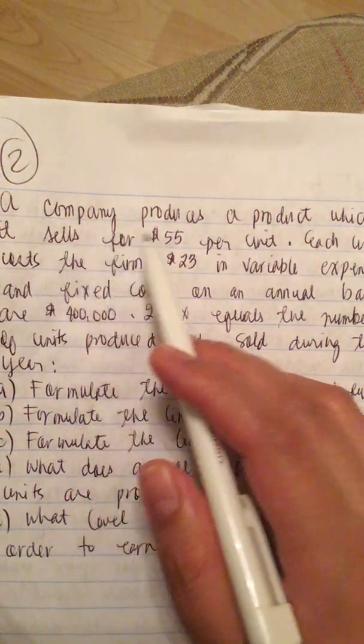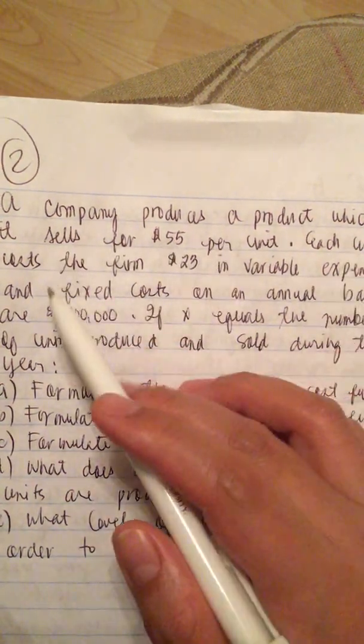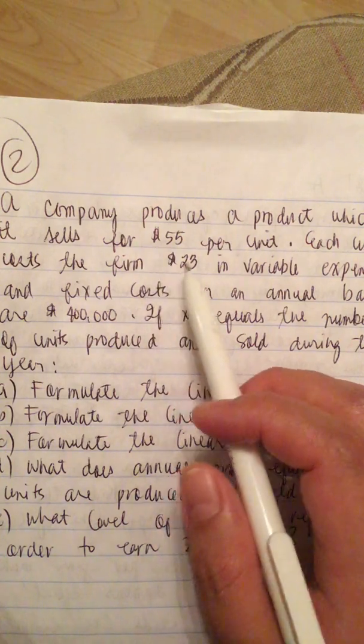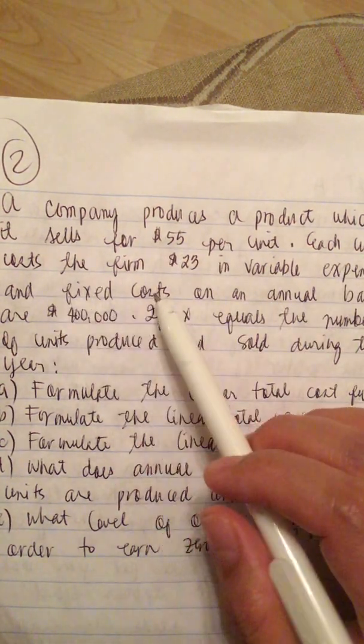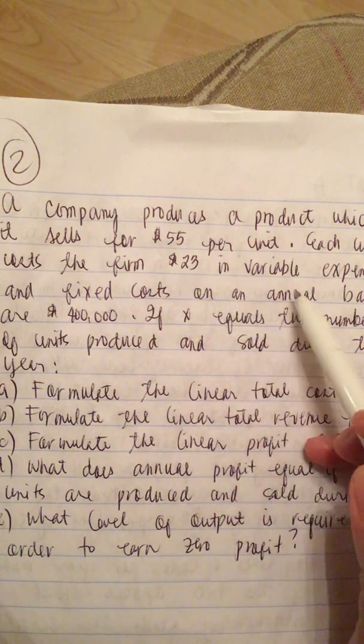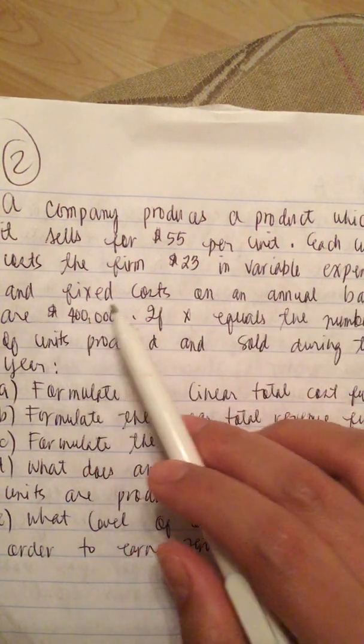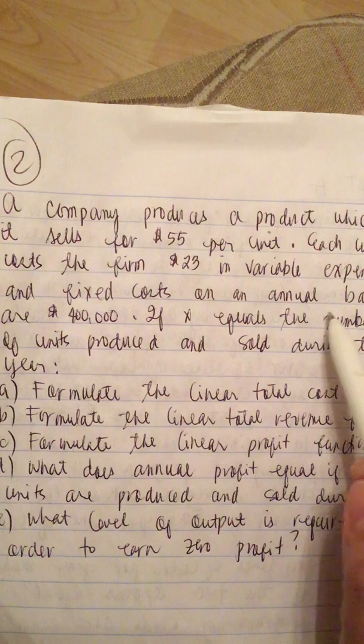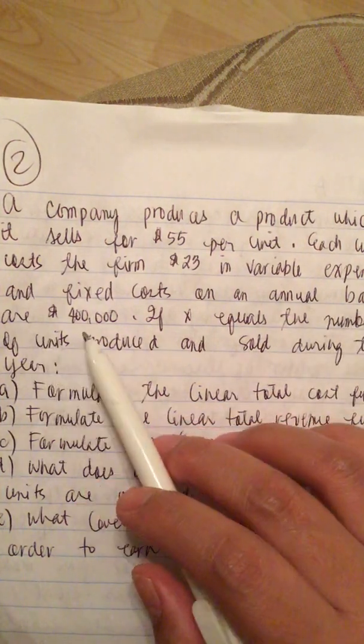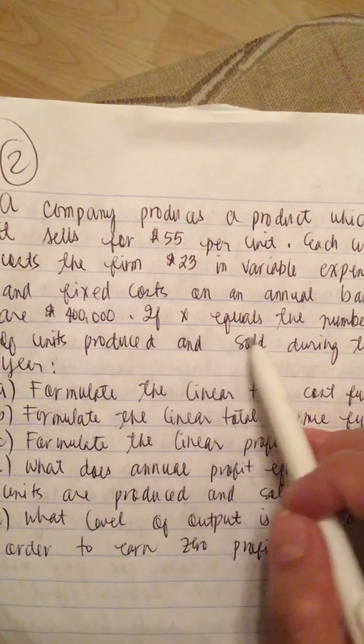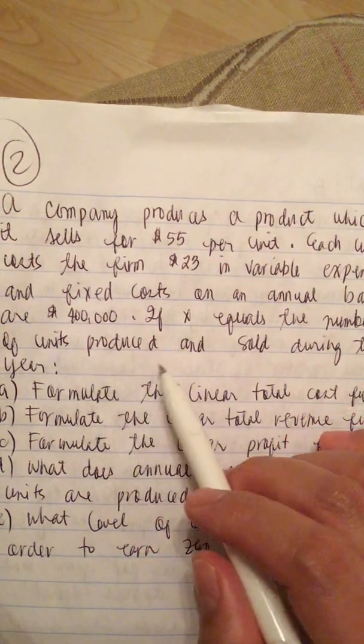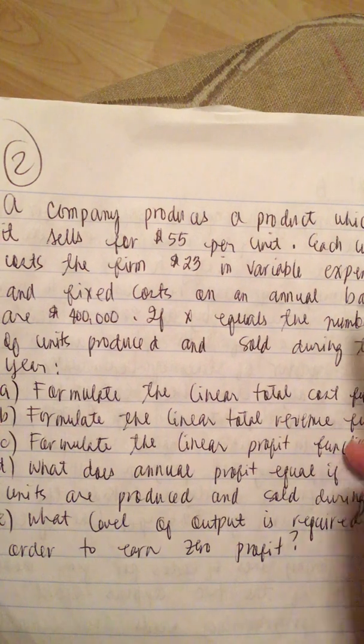A company produces a product which it sells for $55 per unit. Each unit costs the firm $23 in variable expenses and fixed costs on an annual basis are $400,000. If X equals the number of units produced and sold during the year,